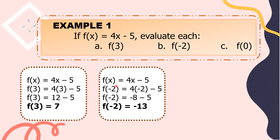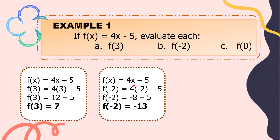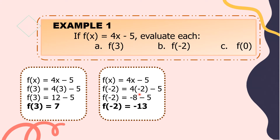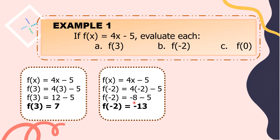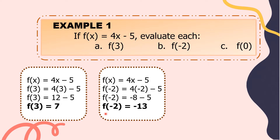Letter B — still our function is f of x equals 4x minus 5. Let's evaluate f of negative 2. We just change x into negative 2. So f of negative 2 equals 4 times negative 2 minus 5. 4 times negative 2 is negative 8; negative 8 minus 5 is equal to negative 13. So f of negative 2 is equal to negative 13.